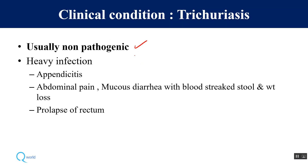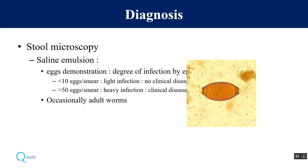The clinical condition is known as trichuriasis. Most infections do not cause any pathogenicity, but with a heavy worm load it may cause appendicitis, abdominal pain, mucus diarrhea with blood streaks, and sometimes weight loss. In very heavy infections it may spread to the rectum, causing prolapse of the rectum. Diagnosis is most easily done by stool microscopy.